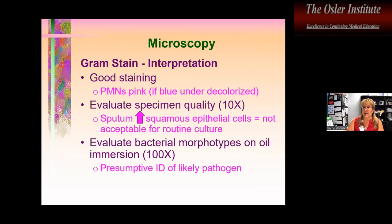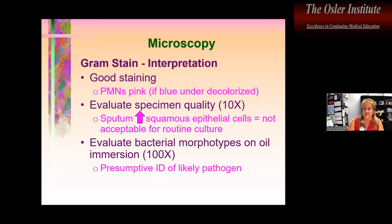When interpreting Gram stains, first assess stain quality. Host cells like neutrophils — and hopefully no squamous cells — should all be pink. If host cells are blue or purple, you've under-decolorized. Next, evaluate specimen quality on low power — this is essential with respiratory specimens. Specimens from the lower respiratory tract with many squamous cells are not acceptable for culture. Different labs have different screening methods, but a screening protocol must be in place.